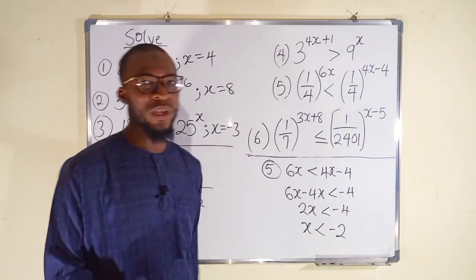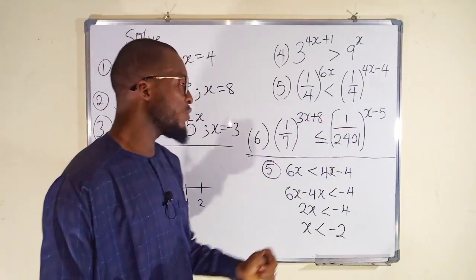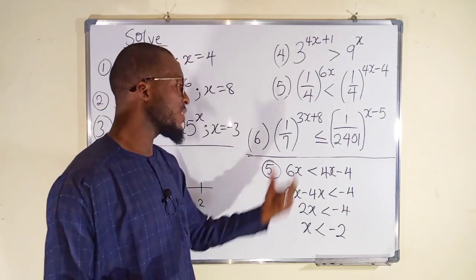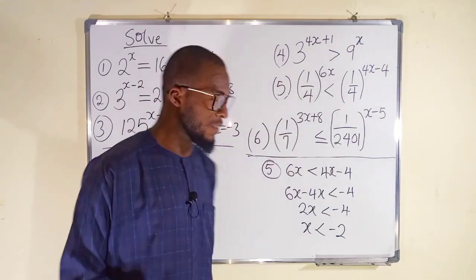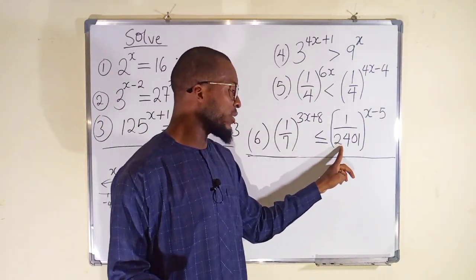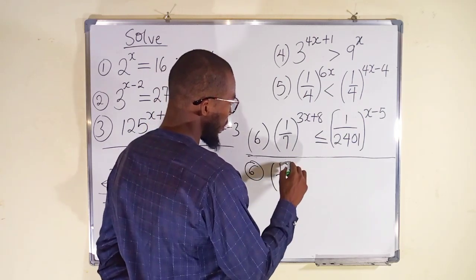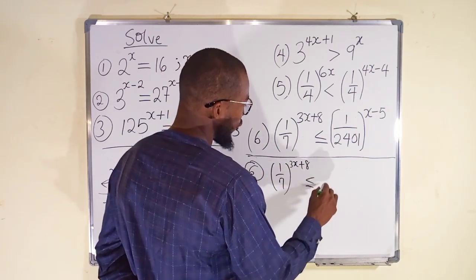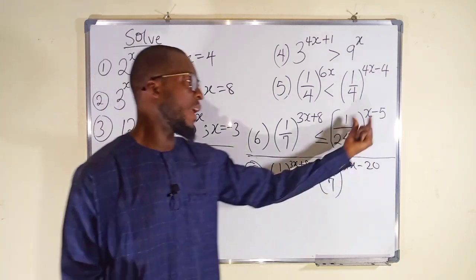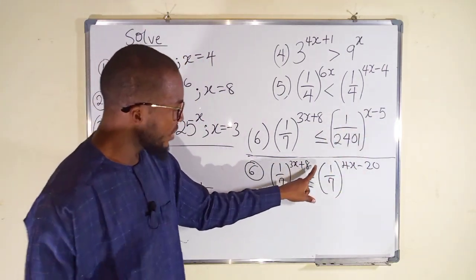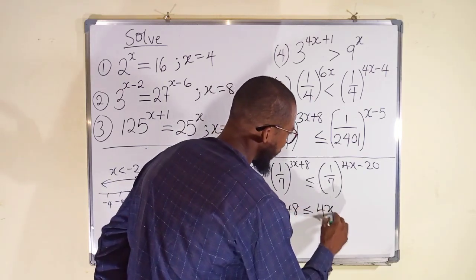For the last inequality, we have (1/7) raised to the power of (3x plus 8), and that is less than or equal to (1/2401) raised to the power of (x minus 5). Since 7^4 equals 2401, we can write 1/2401 as (1/7)^4. So the right side becomes (1/7) raised to the power of 4(x minus 5), which distributes to (1/7)^(4x minus 20). Now we have common bases and can relate the powers: 3x plus 8 is less than or equal to 4x minus 20.